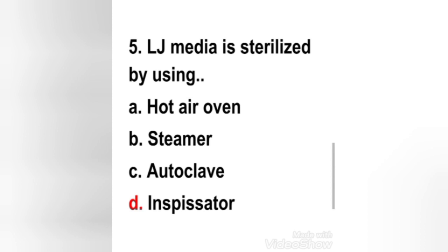Next question: LG media is sterilized by using which method? Options: hot air oven, steamer, autoclave, inspissator. The right answer is option D — inspissator. Inspissation is done between 75 and 80 degrees Celsius. Inspissation means stiffening of protein without coagulation, as the temperature is below the coagulation temperature.